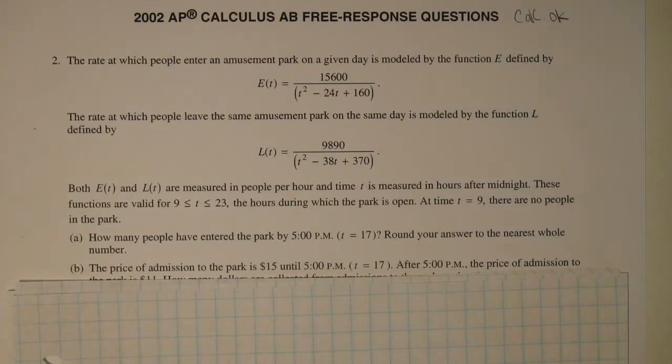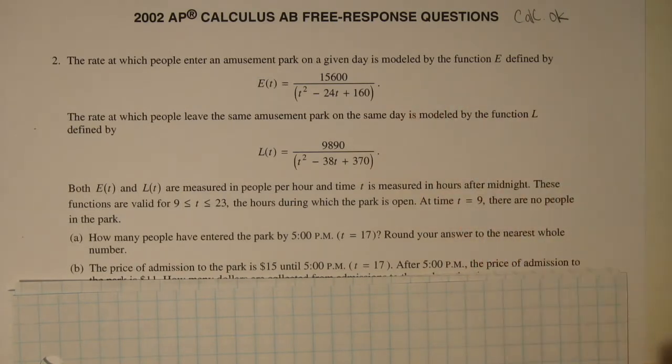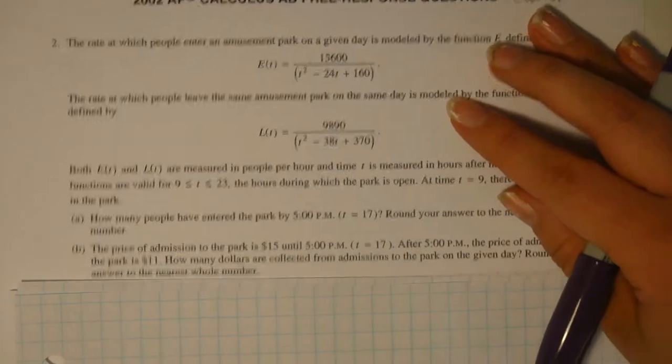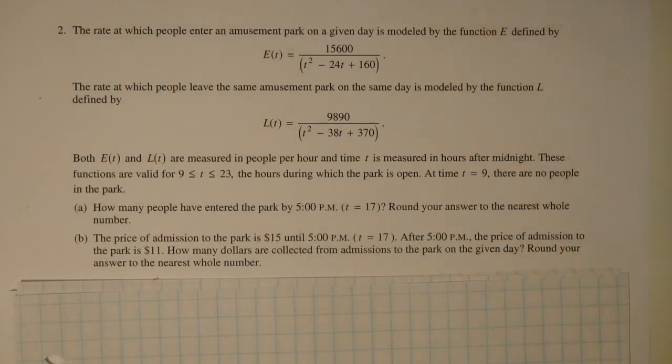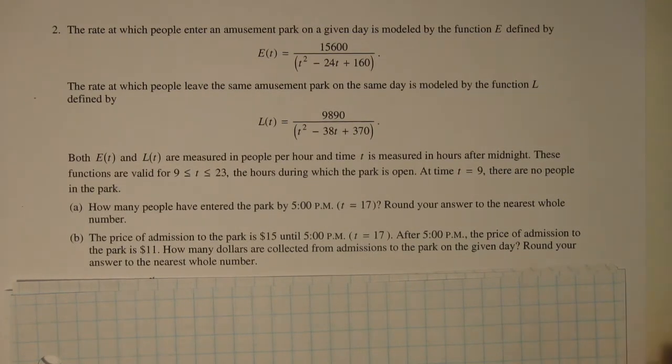Number 2 reads, the rate at which people enter an amusement park on a given day is modeled by the function E. The rate at which people leave the same amusement park on the same day is modeled by the function L. Both E and L are measured in people per hour and time T is measured in hours after midnight. These functions are valid for 9 to 23, the hours during which the park is open. At time T equals 9 there are no people in the park.